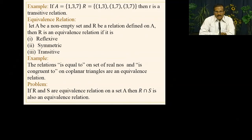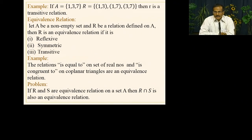When we talk about equivalence relations, examples include: equality on integers (is equal to), congruence on real numbers (is congruent to), and co-planar relations. These mathematical statements form the relation and the statement 'is equal to' and 'is congruent to' all give equivalence relations.